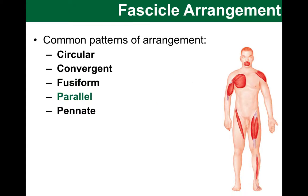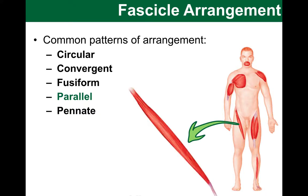Next, I would like us to look at parallel arrangement of the muscle fibers. Here we have fibers that run in the same direction as each other, following the long axis of a strap-like muscle. A good example of that would be the sartorius muscle, which runs from the lateral hip to the medial thigh.